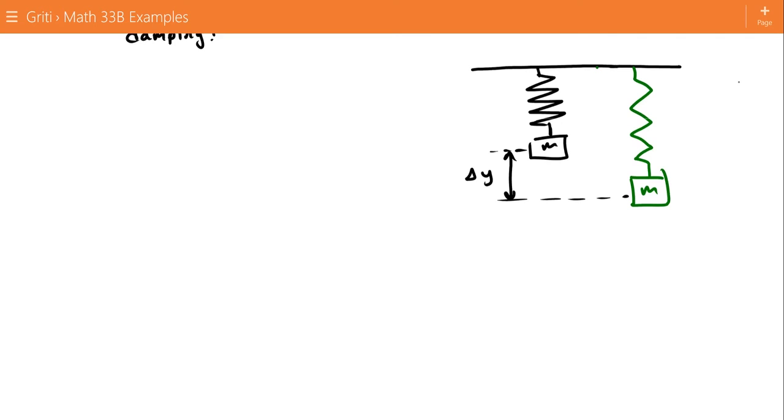So, at equilibrium, the net force is 0. That means the force of the spring plus the force of gravity equals 0. Gravity is pulling down, and it equals mg.